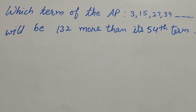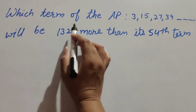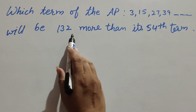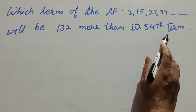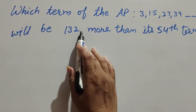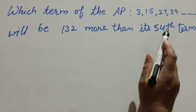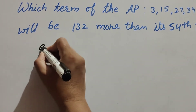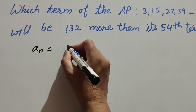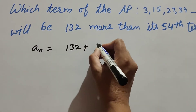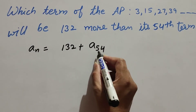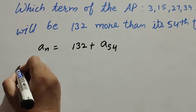Hello friends, welcome to my channel. In this video we discuss which term of the AP 3, 15, 27, 39 will be 132 more than its 54th term. So in this question we find the nth term, that is 132 more than its 54th term, which we call a_n.